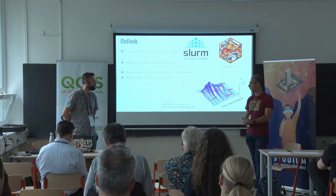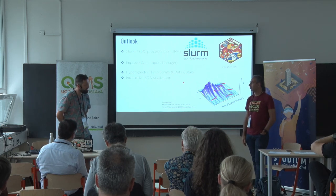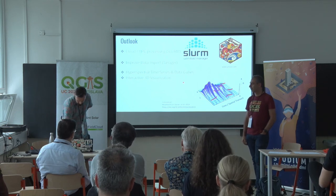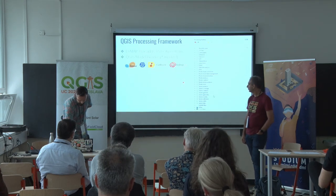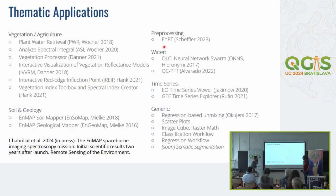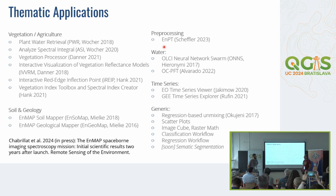Regarding atmospheric correction — a big difference with airborne hyperspectral data: the hope is that your data provider delivers already corrected data. But there is also the ENPT (EnMAP pre-processing tool), developed by Daniel Scheffler, which allows you to perform detailed atmospheric correction of EnMAP data. The EnMAP Box has a graphical user interface for it, but you can also install it from pip without the EnMAP Box if you want to process and do atmospheric corrections for multiple EnMAP images.